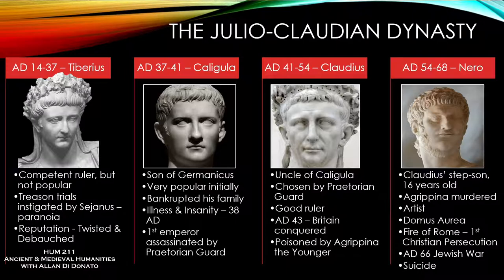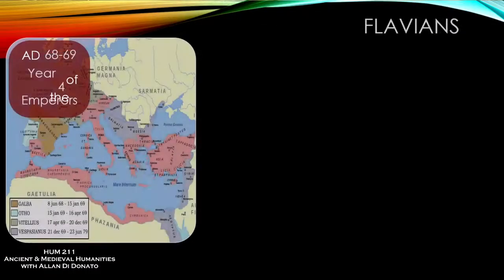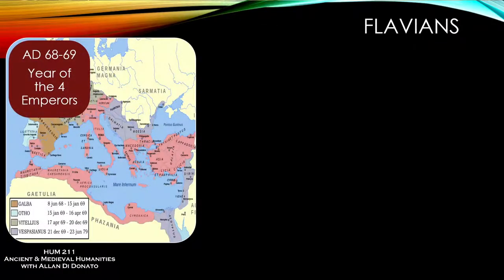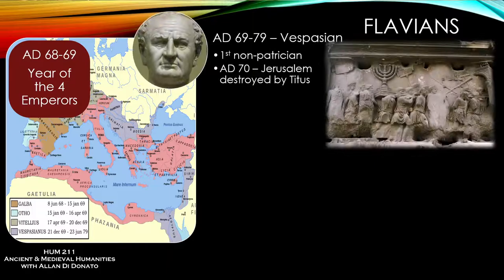That was effectively the end of the Julio-Claudian dynasty, and even though we're in the period of the Pax Romana, you do have a year of ultimate chaos that follows. It's called the year of the four emperors from 68 to 69 — Galba, Otho, and Vitellius all ruling for a very brief period of time. Some of these guys are generals proclaimed by their legions who march on Rome, but the last of the four is Vespasian.